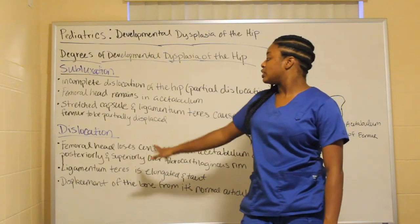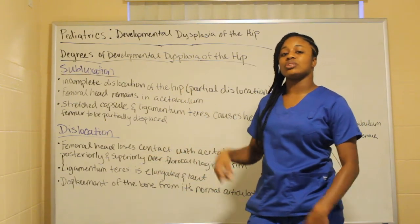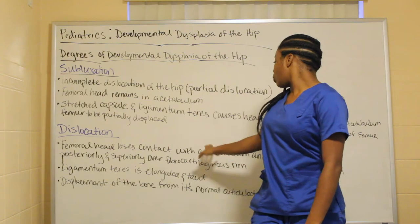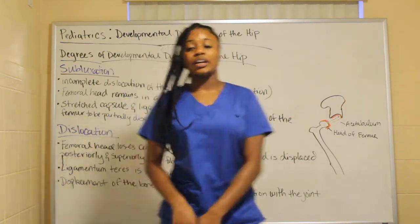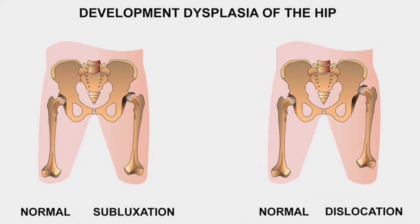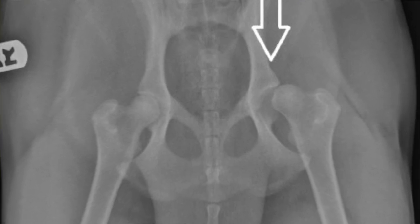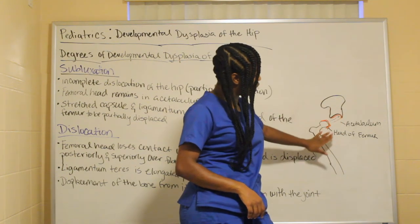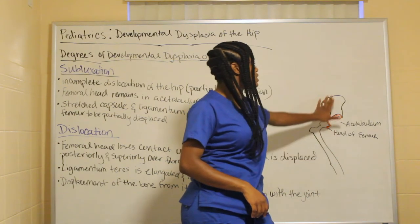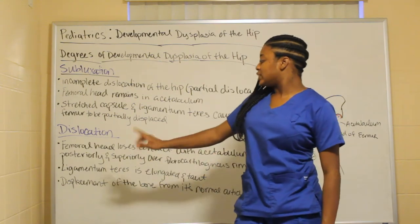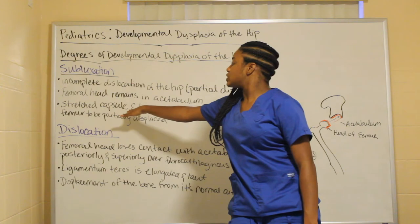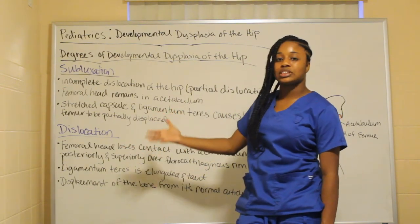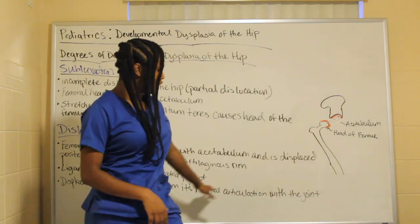The dislocation is the worst degree because there is going to be a detachment — the femoral head loses contact with the acetabulum and is displaced. It is completely displaced posteriorly and superiorly over the fibrocartilage rim. The head of the femur is not within the acetabulum at all. The ligamentum teres is elongated and taut, and this represents a complete displacement of the bone from its normal articulation within the joint.